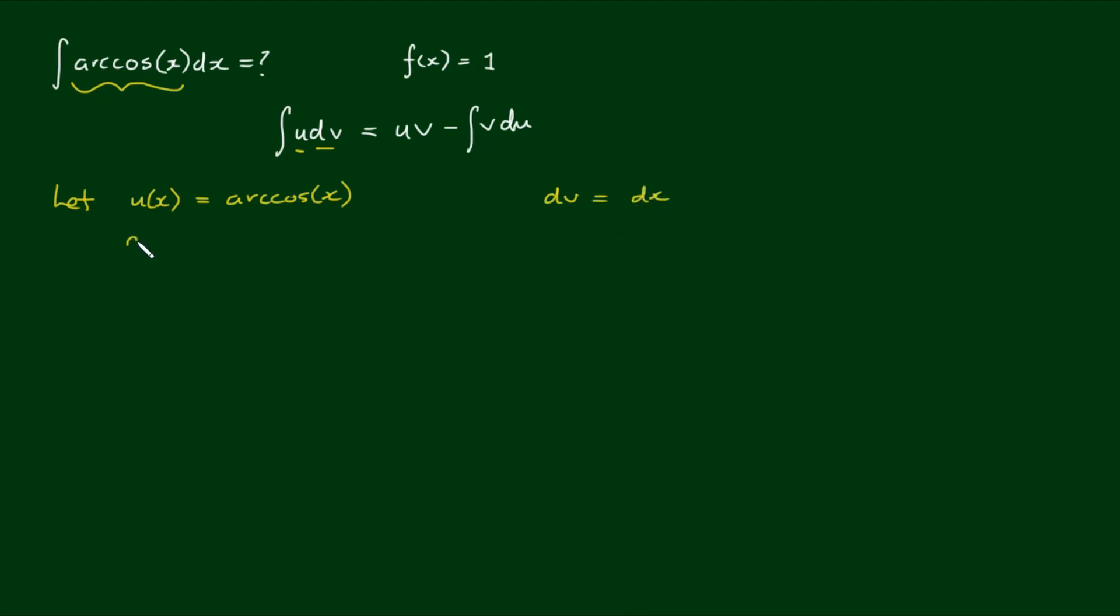The derivative du/dx is equal to—we found in a previous video that the derivative of the arc cosine of x is equal to negative 1 over the square root of 1 minus x squared. I'll link that video on the top right-hand corner. So separating the differentials, we have du equals negative 1 over the square root of 1 minus x squared dx.